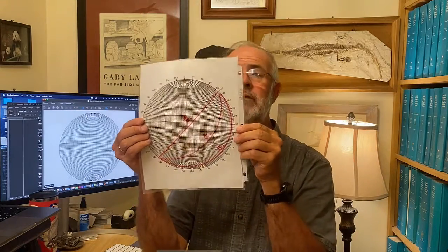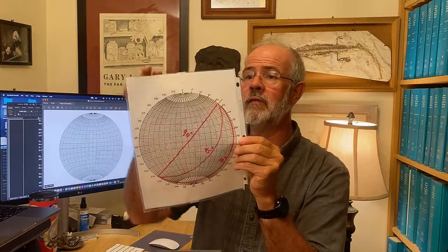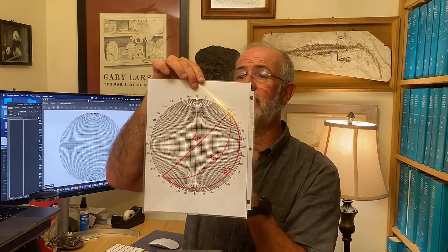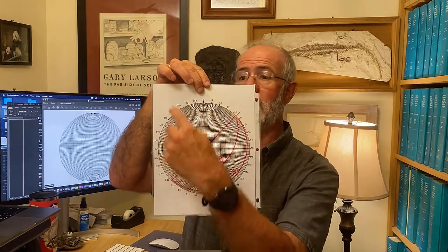Now we can represent that whole thing as a two-dimensional plot like this. It's called a Schmidt net and there's also something called a Wulff net which is similar to this.